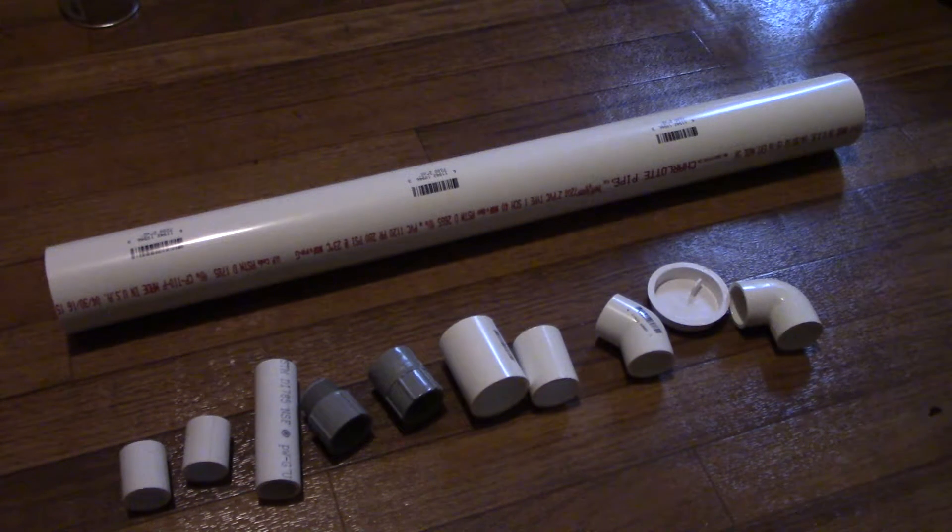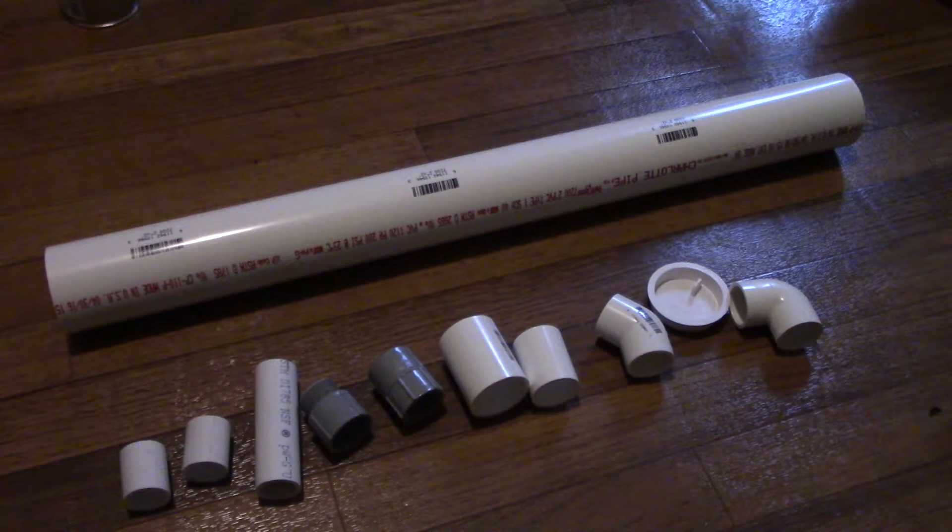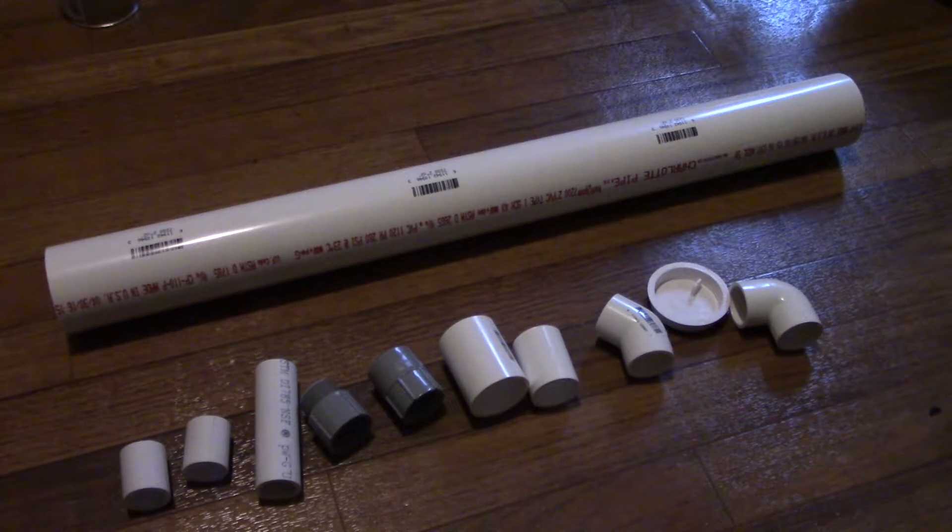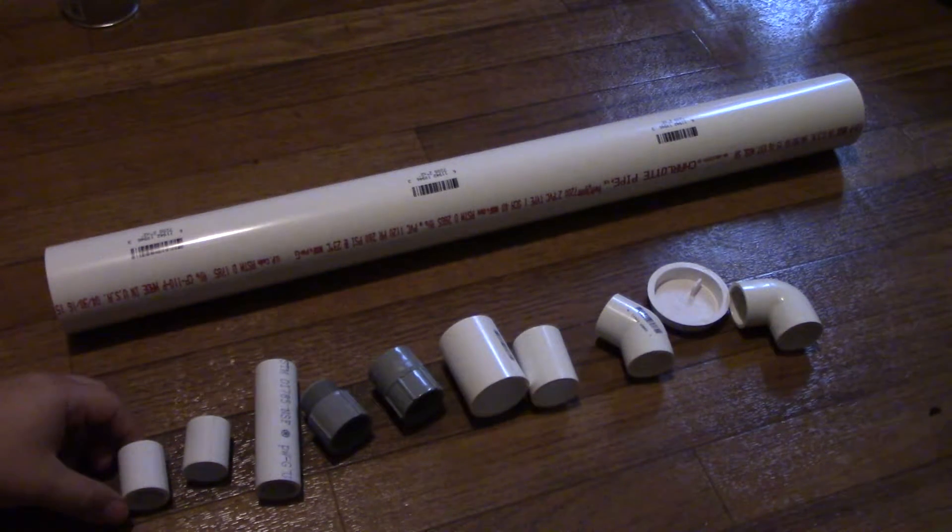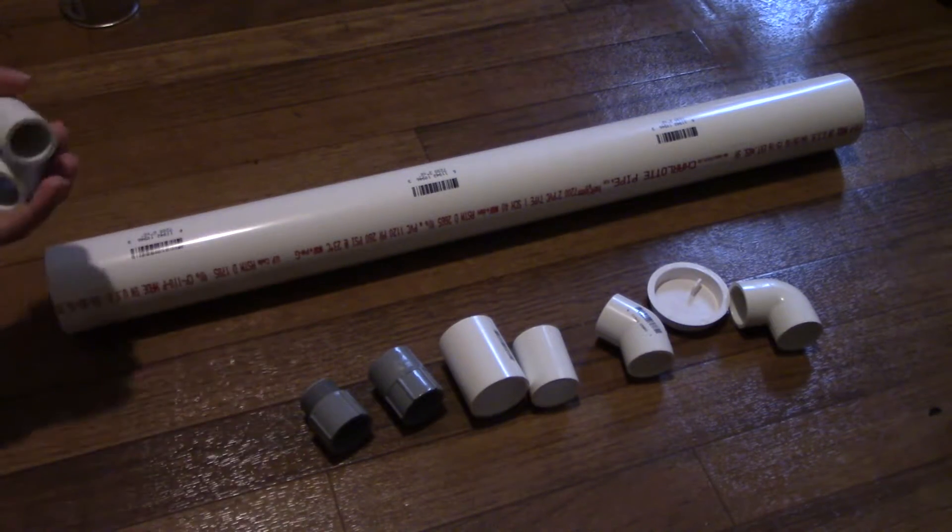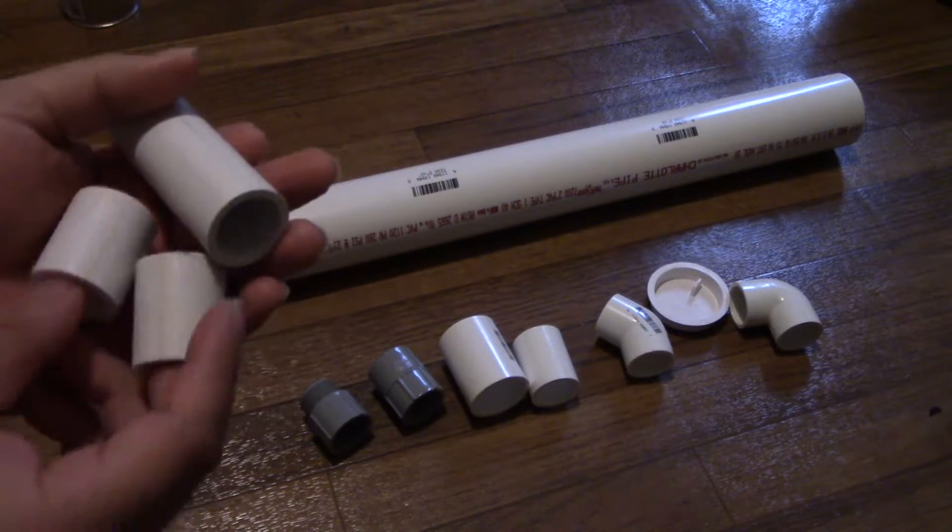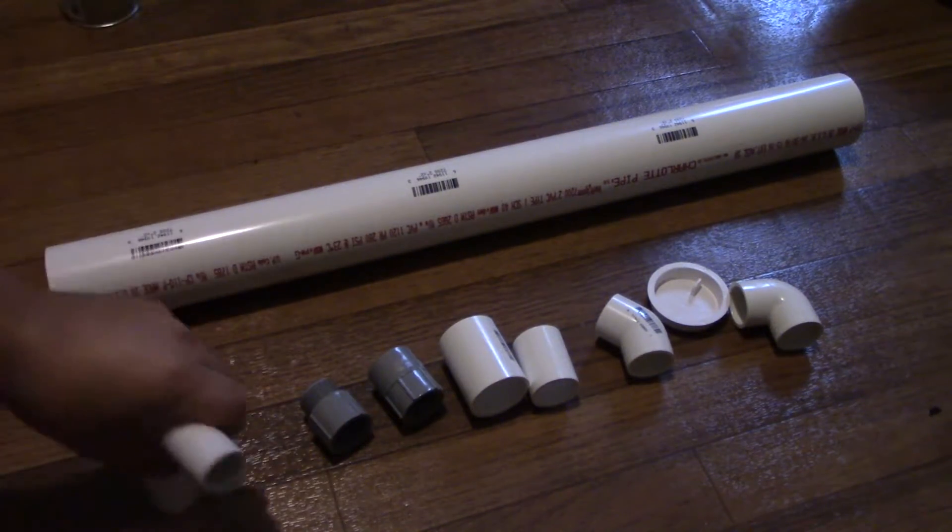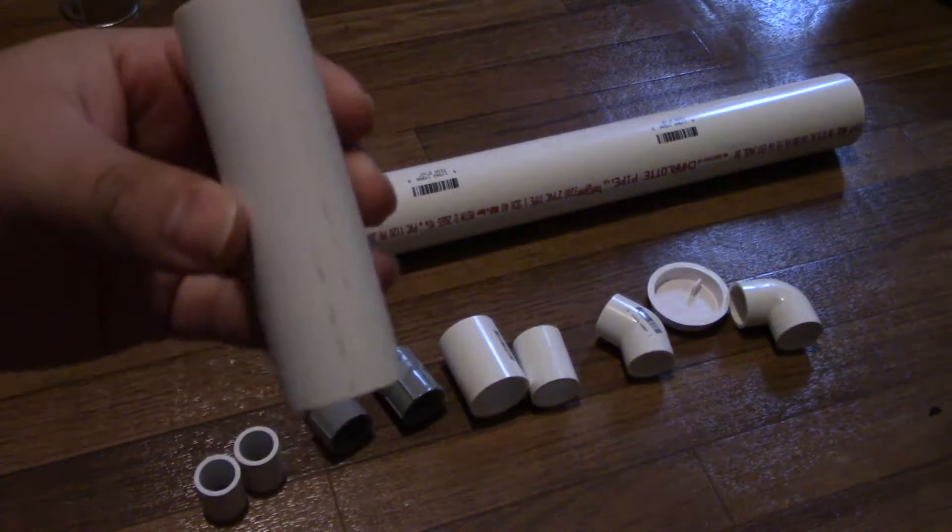Now I'm going to show you how to build the bell siphon. This specific design is one that's worked for me and so I haven't changed the design. For it you'll need a three-quarter inch pipe, and I've cut it down to two inch and a quarter pieces and one three and a half inch piece.